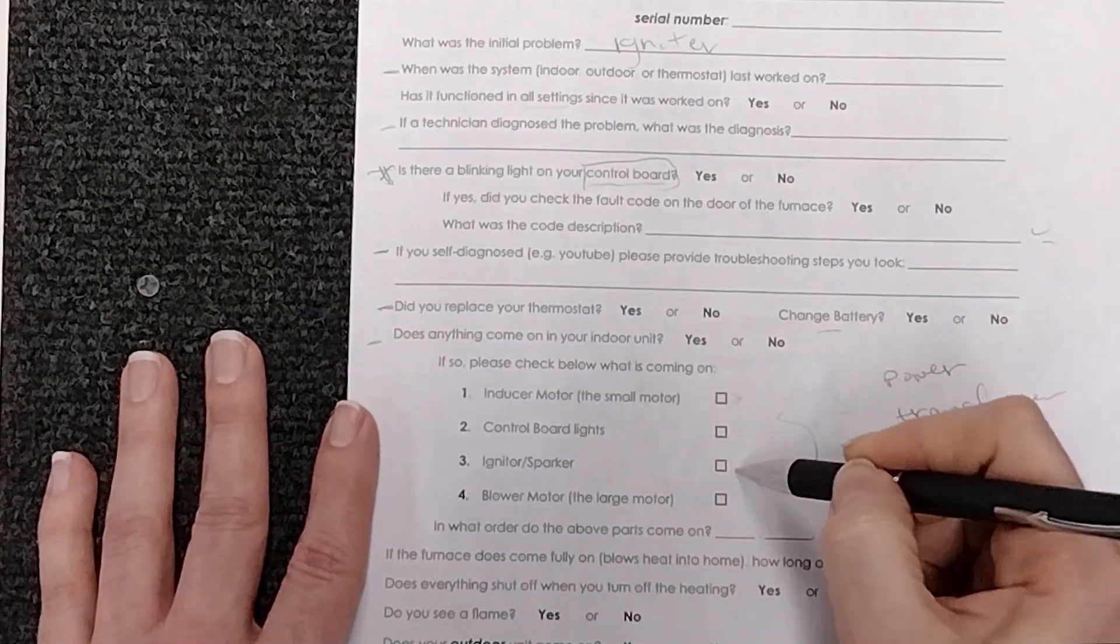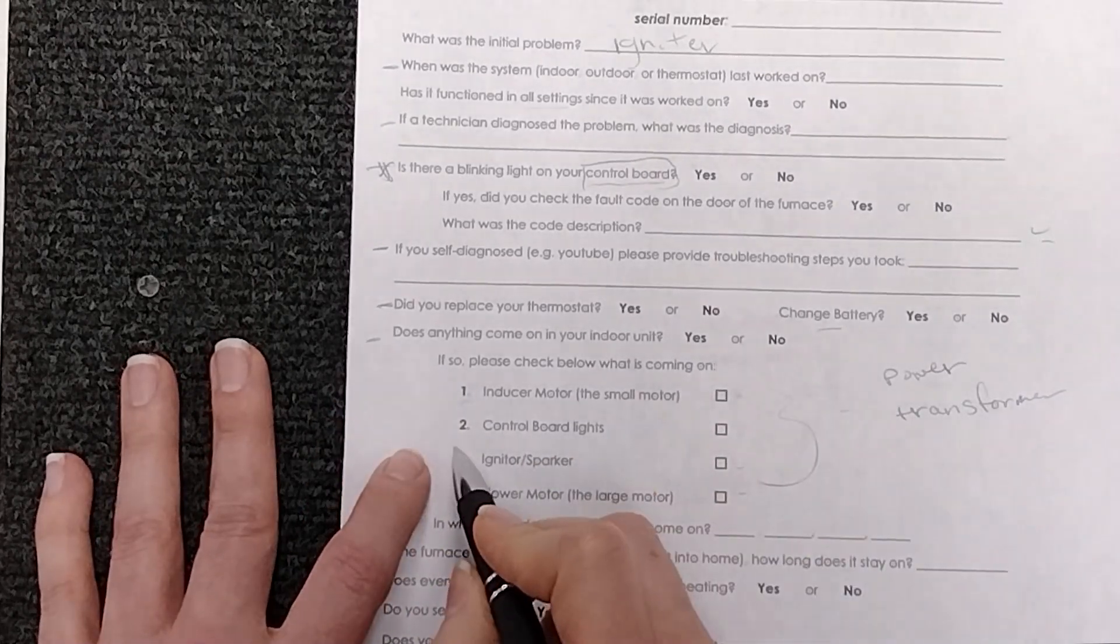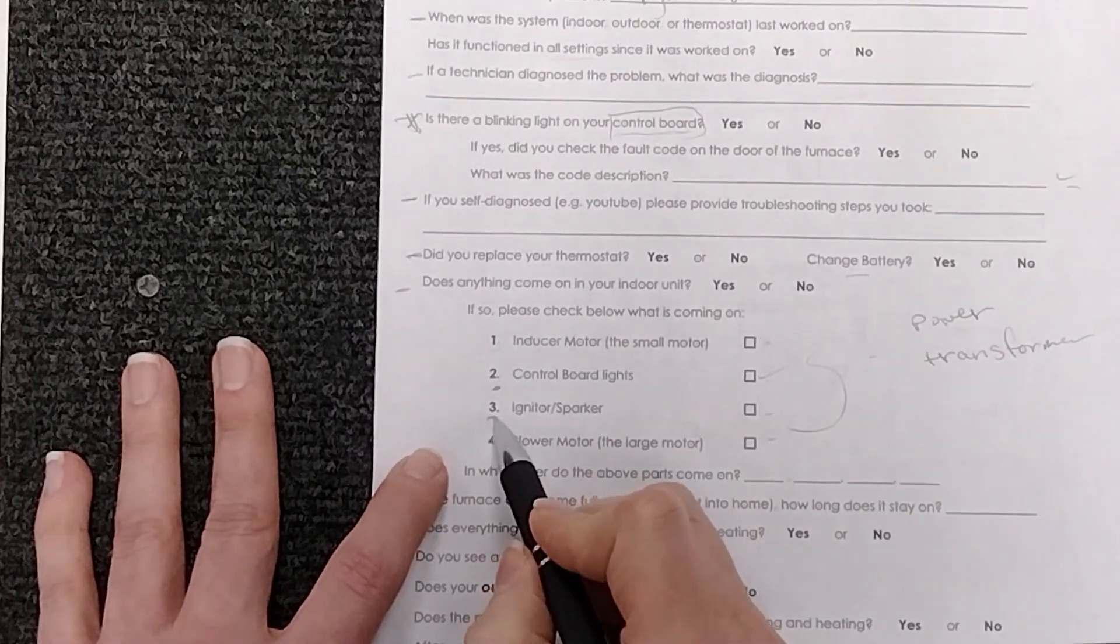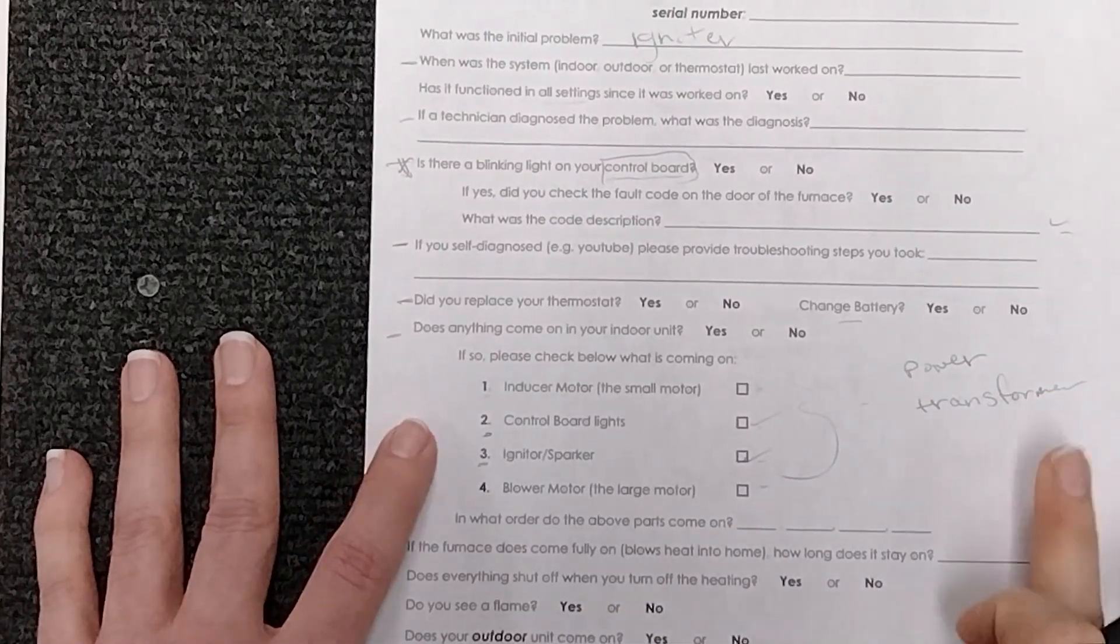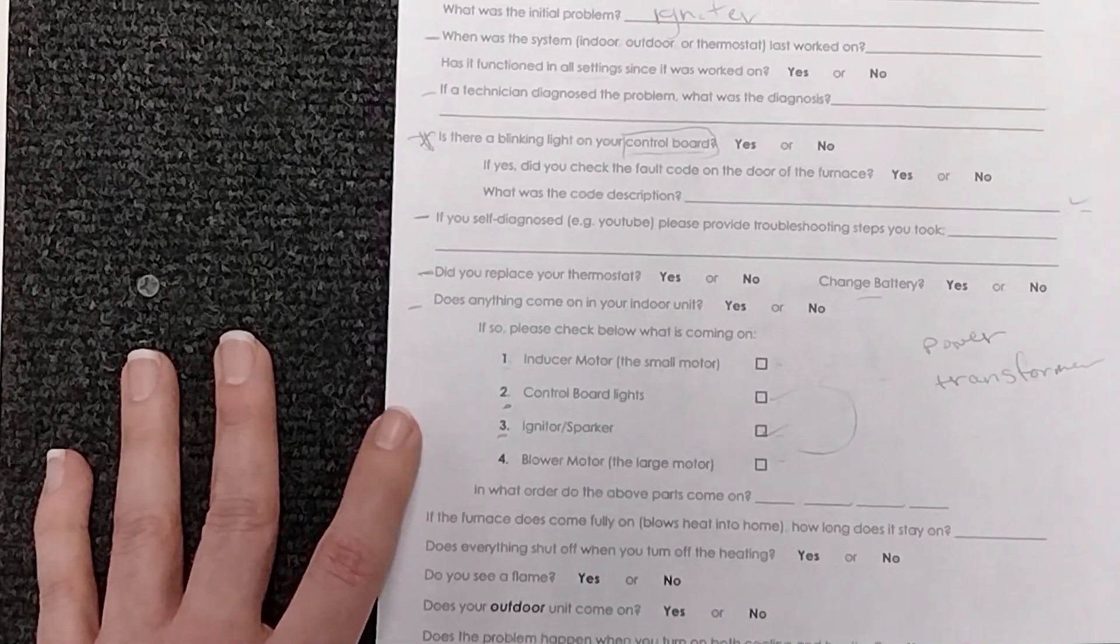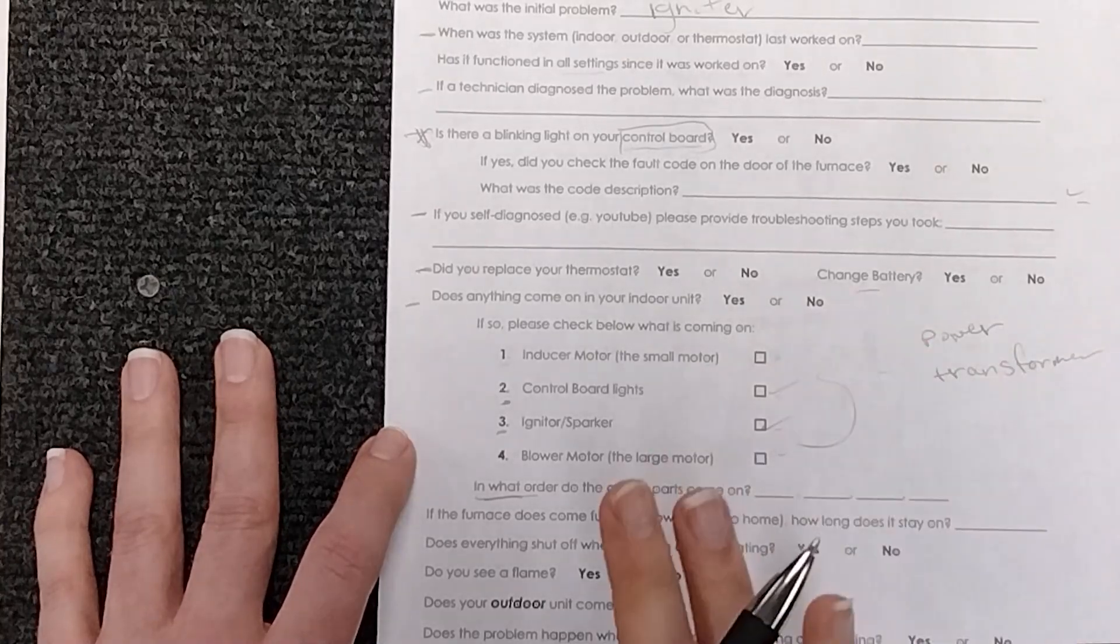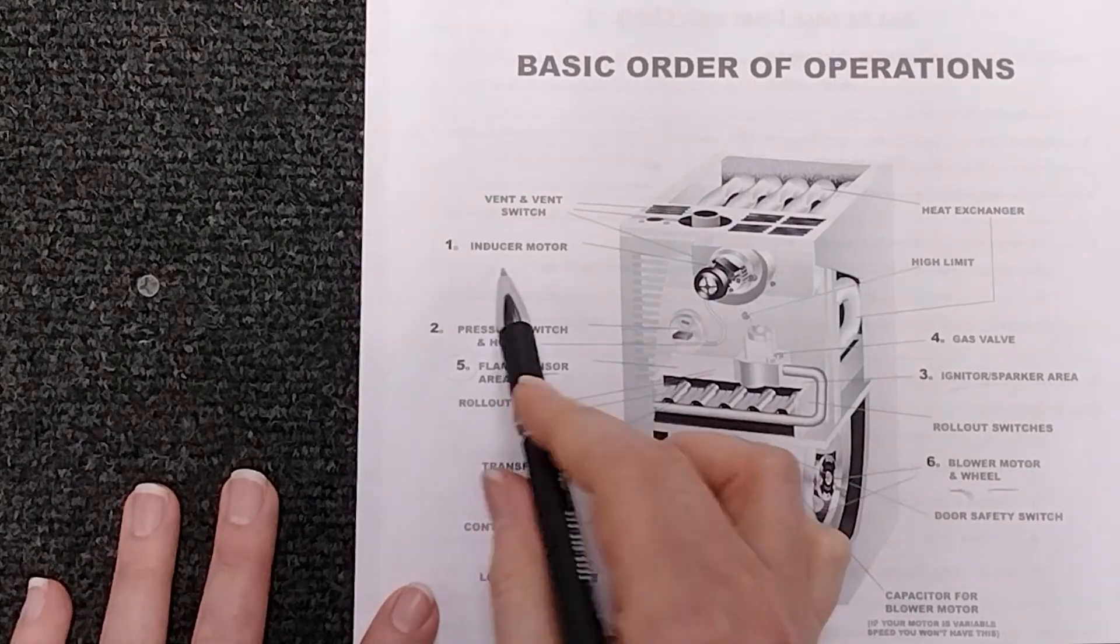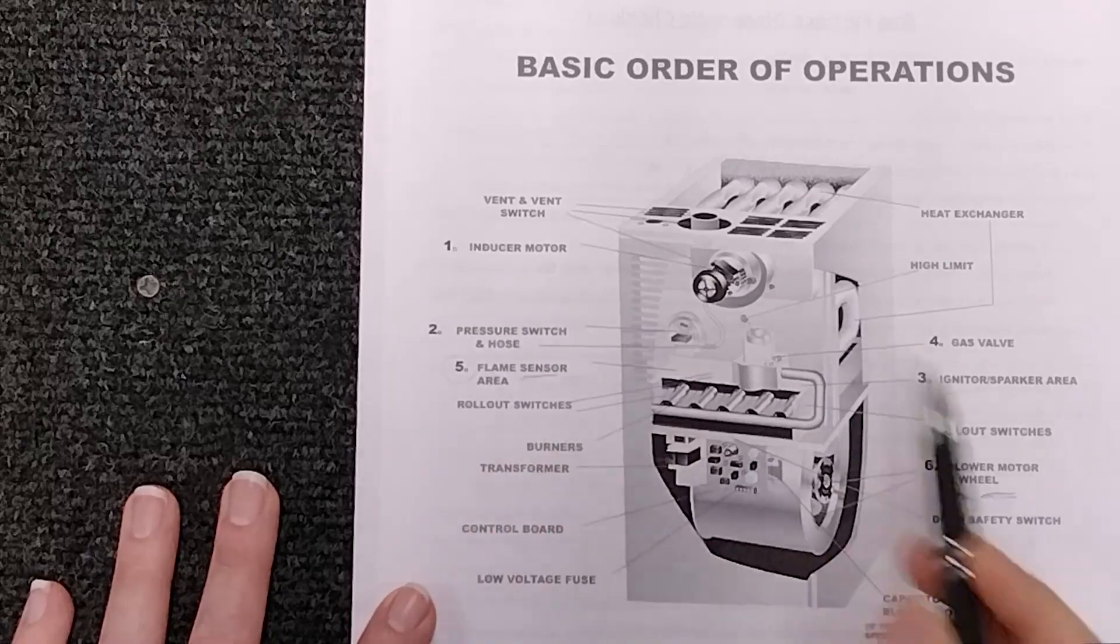So here's our checklist for what should be coming on. Inducer motor comes on first. Check. Okay. Control board lights come on. Check. The igniter or sparker comes on. Check. So on and so forth. List it out for yourself to figure out again where that problem is stemming from. And right here we've said in what order do these parts come on. So again if your inducer motor and your blower motor come on at the same time is that within our order of operations? No. No it is not. So clearly it's got something going on here.